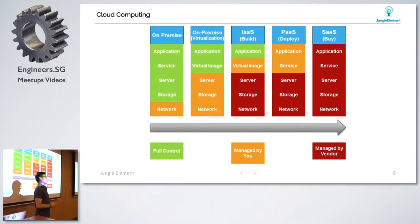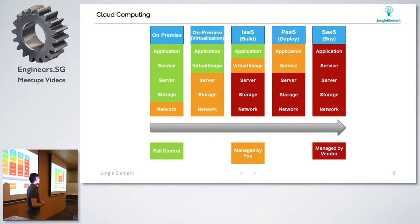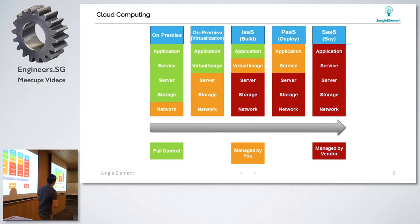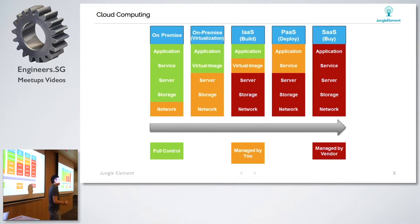Cloud computing has been one of the areas we've been talking about since 2010-2011, all the way to now, and it's rising. Your on-premise controls everything - your network, storage, infrastructure, services, and applications. As we move into cloud computing, we are talking about three tiers: infrastructure as a service where you build on top of the infrastructure provided - for example, Microsoft Azure, AWS, IBM. Then platform as a service, which allows you to deploy your solutions like Heroku or Cloud Foundry.